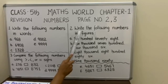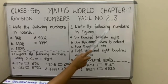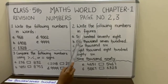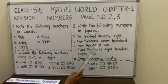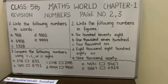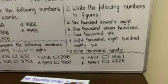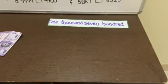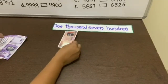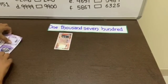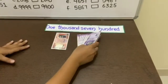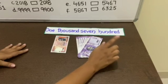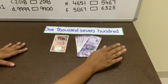The second question: write the following numbers in figures. We will solve part B, that is 1700. Now we have the statement written on the flash card. We will take currency notes according to the statement — 1700. There is no digit at the place of tens and ones, so we will not take any 10 rupee or 1 rupee note.